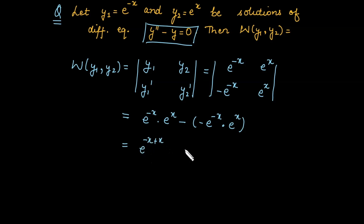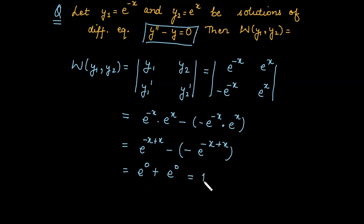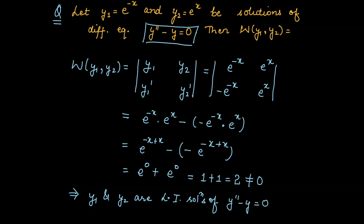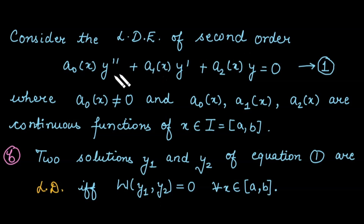Since the bases are the same, we add the powers: e^(-x+x) = e^0 = 1. The minus times minus gives plus, so we get 1 + 1 = 2. This is not equal to 0 for any value of x, so we can say that these two functions are linearly independent solutions of the given differential equation.